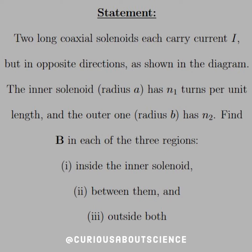The inner solenoid, radius A, has N1 turns per unit length, and the outer one, radius B, has N2. Find B in each of the three regions: inside the inner solenoid, between them, and outside of both.